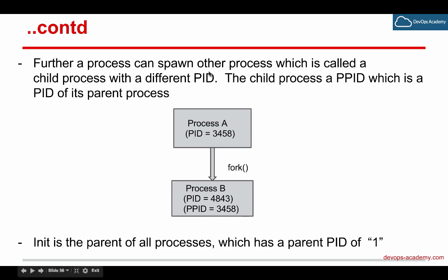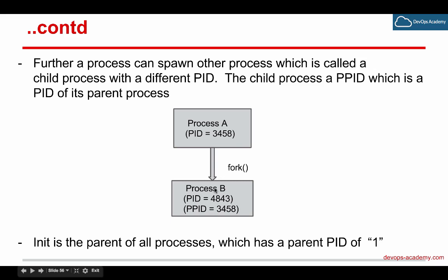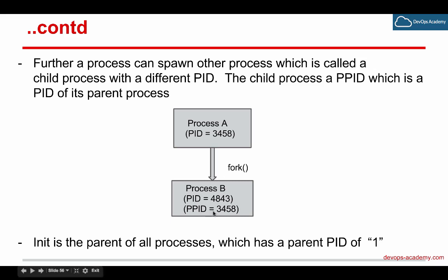A process can spawn other processes, which are called child processes, with a different PID. For example, suppose process A is there — it can create another process called process B, which is said to be a child process. Here the PID of process A is 34584, and process B's PID is 4843. There also exists another attribute called the PPID, which is the parent process ID. The parent process ID is the process ID of process A — so 34584 is the PPID for process B.